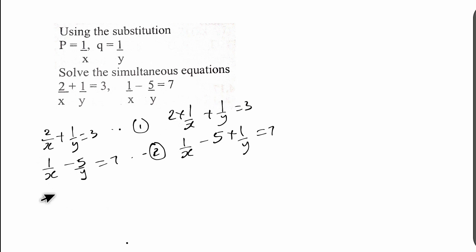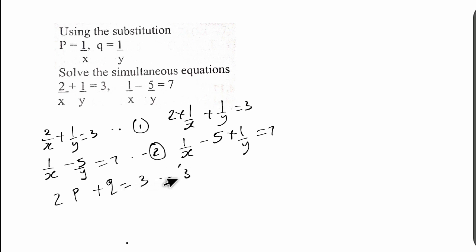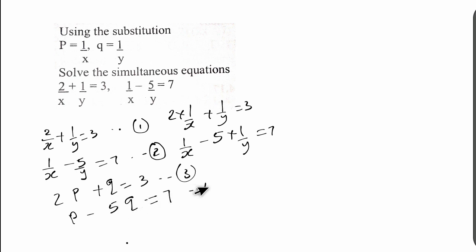Now substituting p for 1/x and q for 1/y, equation one becomes: 2p + q = 3 — let's call this equation three. And equation two becomes: p − 5q = 7 — let's call this equation four.